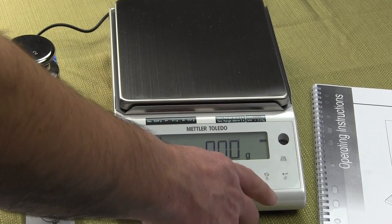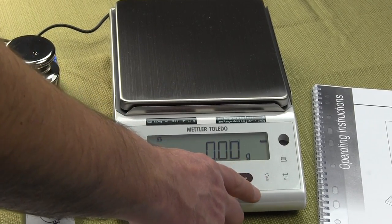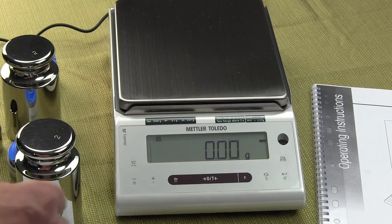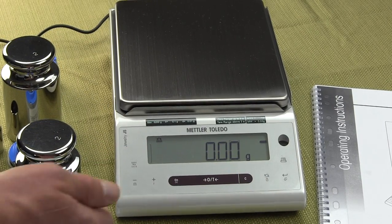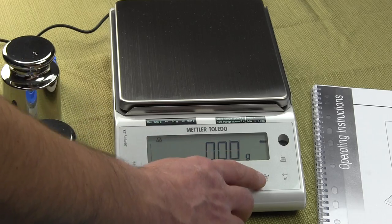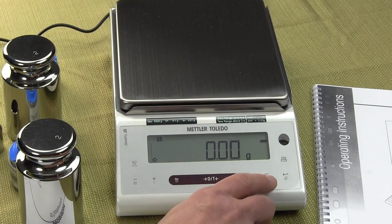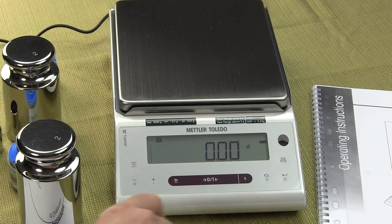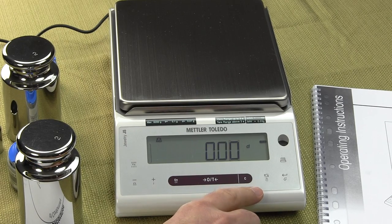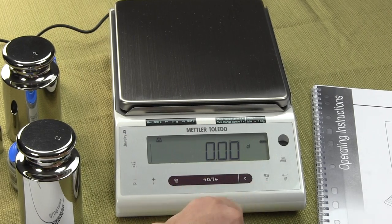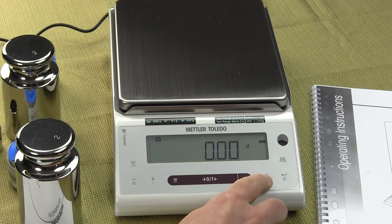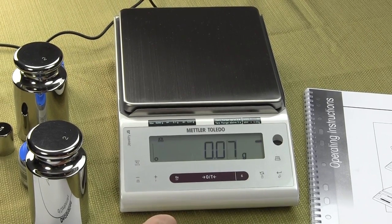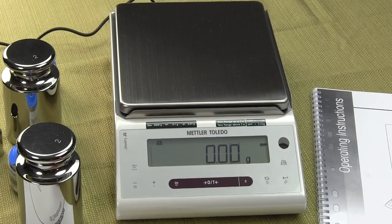This key right here enables you to toggle between a different weigh mode. Mettler Toledo says basically press and release is less than one and a half seconds. So if I just press it, you'll notice now I'm in carats. So the secondary mode on this balance is carats. Press it again. The primary mode is grams.